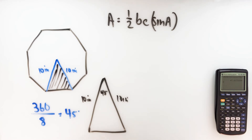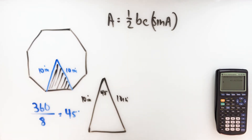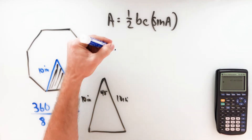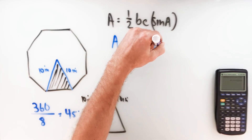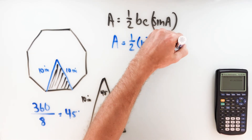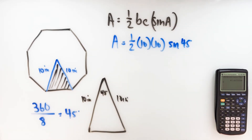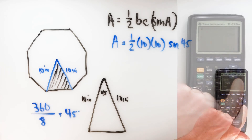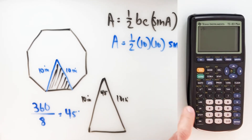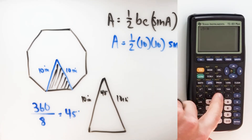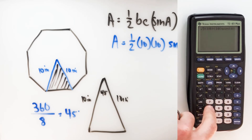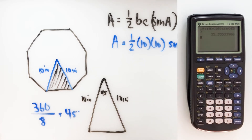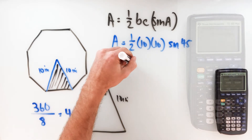It's going to take quite a bit less time than finding the apothem and perimeter in this circumstance. So plug in what we know: area is equal to one half times B and C — both 10 — times the sine of 45 degrees. Going to the calculator: 0.5 times 10 times 10 times sine of 45 degrees.